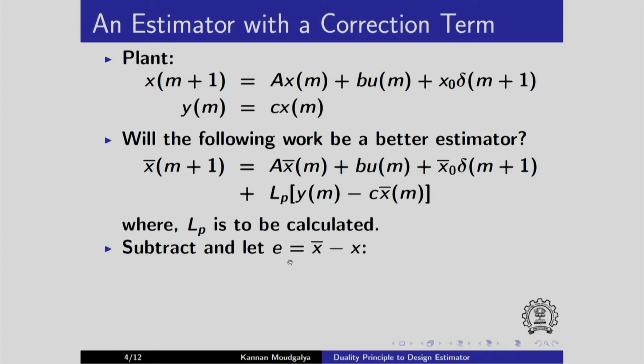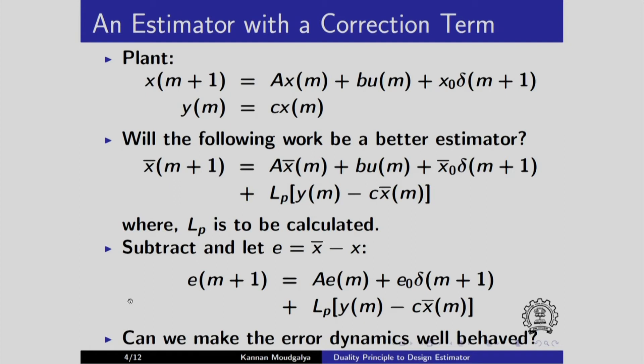As before, subtract and let E equals x bar minus x. We get E this minus this. And then similarly, the first term x bar minus x. And then Bu and Bu cancel. And we get x bar minus x with a subscript 0. We get E0 into delta of m plus 1. And we get this directly here. The question we ask is, can we make the error dynamics given here better behaved?